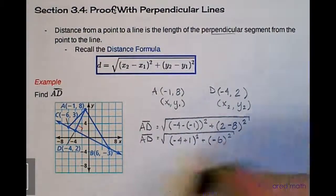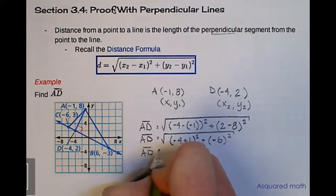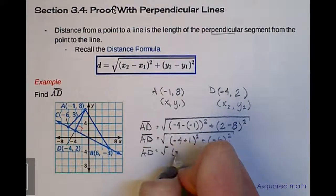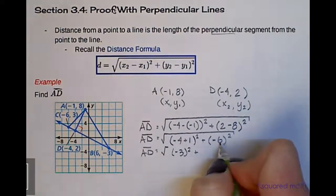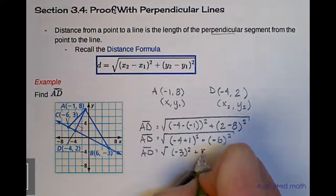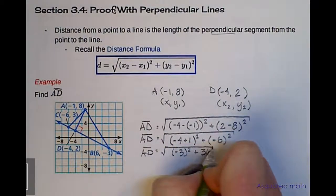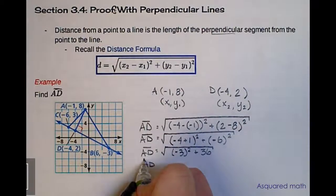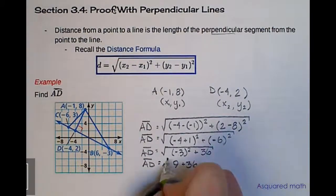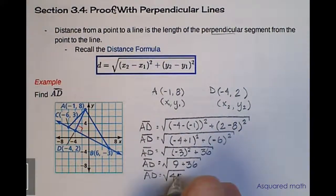Taking the square root of the whole thing, −4 plus 1 gives us −3. That's squared plus, if we square −6, negative times negative gives us positive and 6 times 6 is 36, so we end up with a positive 36. Continuing on, line segment AD equals the square root of (−3 squared plus 36). Negative 3 squared gives us 9 plus 36.